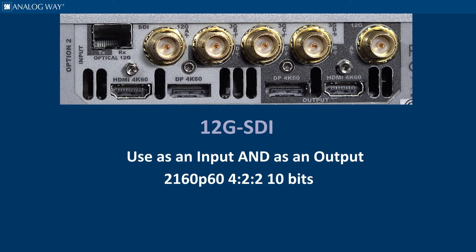As an example, with this card you can accept a 4K 60 signal into HDMI 2.0 or DP 1.2 inputs while outputting a GenLock quad SDI output in two sample interleave, and also output a separate downscaled 1080P copy out of the base unit.